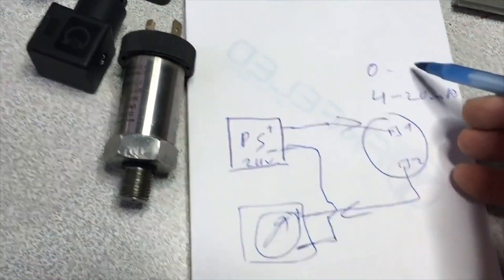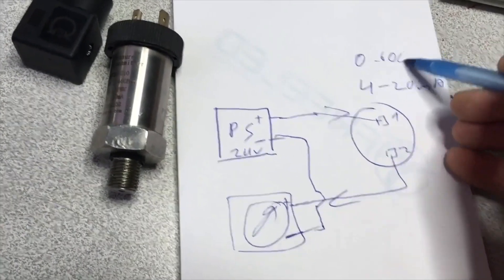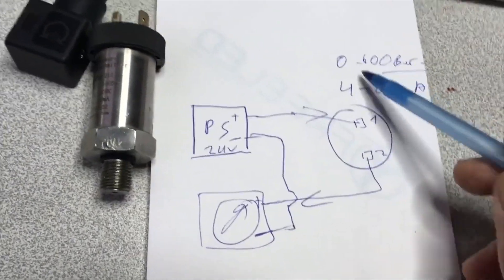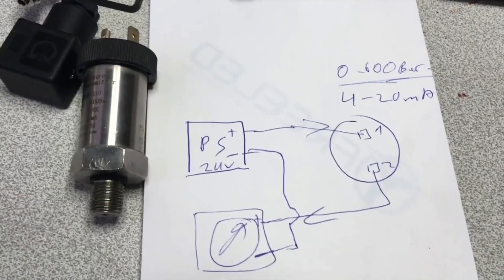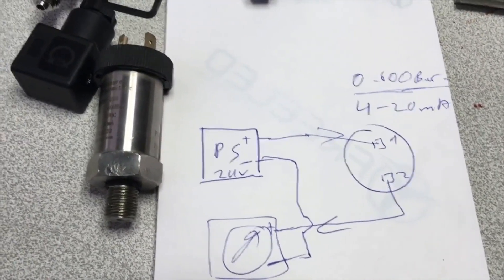This is a current of 4 to 20 milliampere. Of course, we mentioned that the sensor we have is 0 to 600 bars. This is a unique value for this sensor. There are different values in different sensors or we prefer a suitable sensor for our purpose.